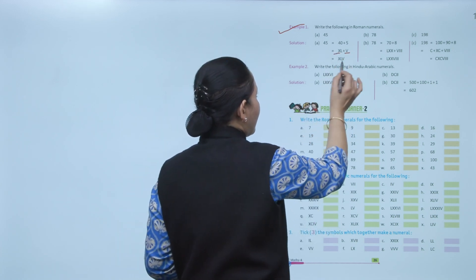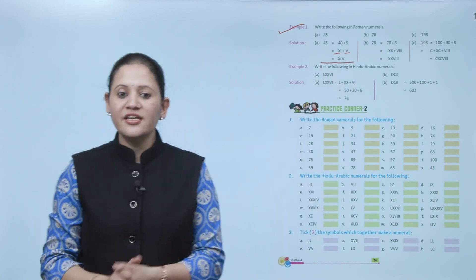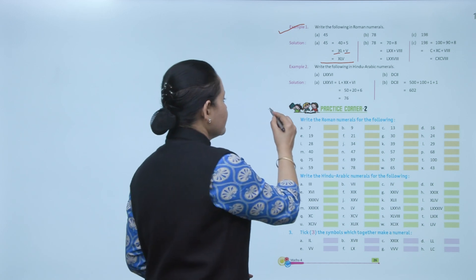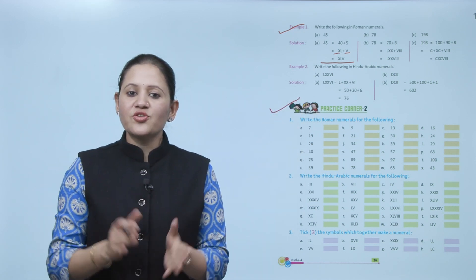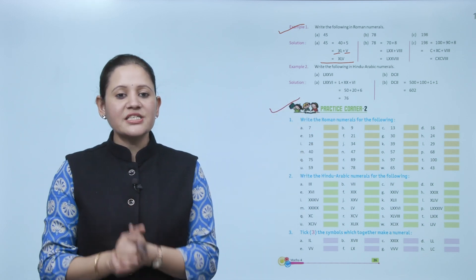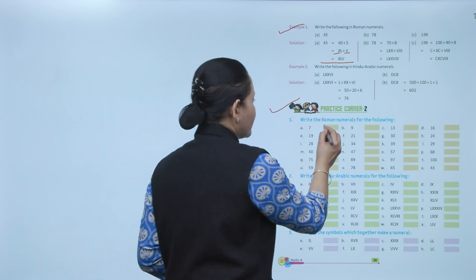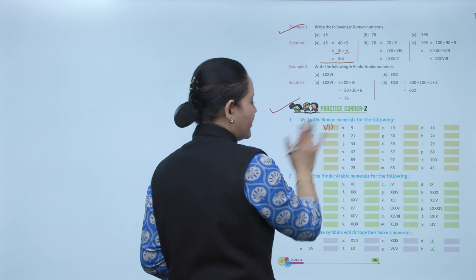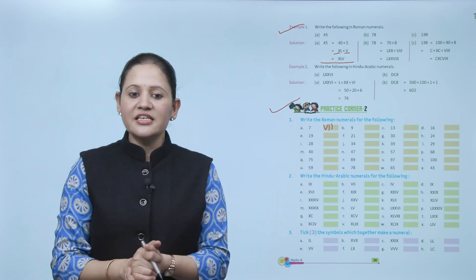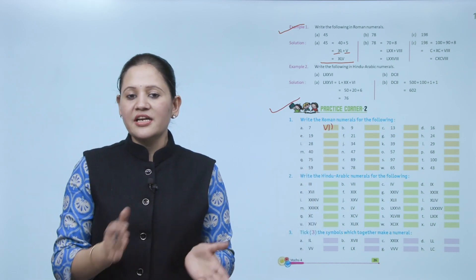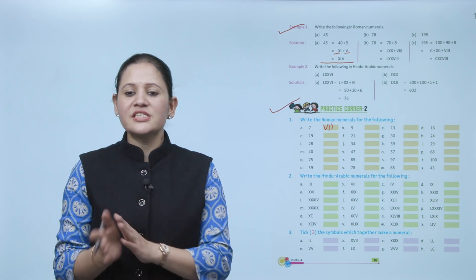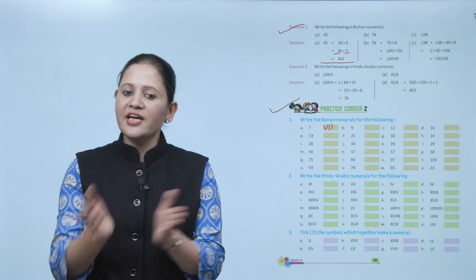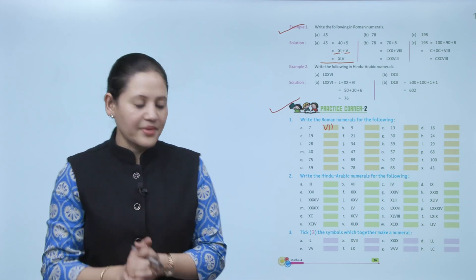Write the Roman numerals for the following. First is number 7. So for 7, first we'll write V, that is 5, 1, 6, and 7. So that is number 7. Like this you have to write the Roman numerals, whatever is given. Like if Hindu-Arabic is given, you have to write in Roman. If Roman is given, you have to write in Hindu-Arabic.